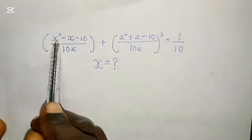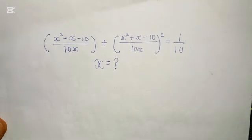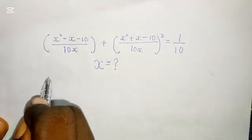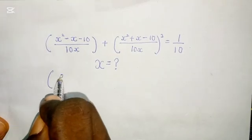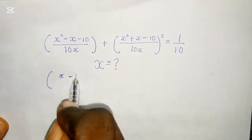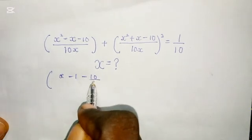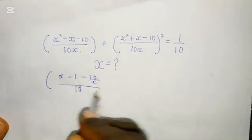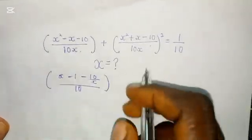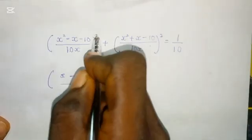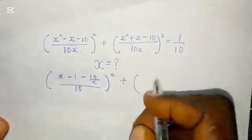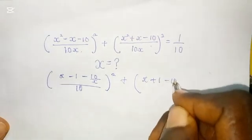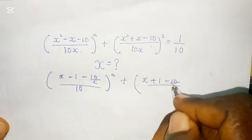Firstly, we are going to divide the numerator and denominator by x. So here now we are going to have x squared divided by x — you have x — this divided by x, minus 1, and minus 10 over x. Also 10x divided by x is going to give us 10.